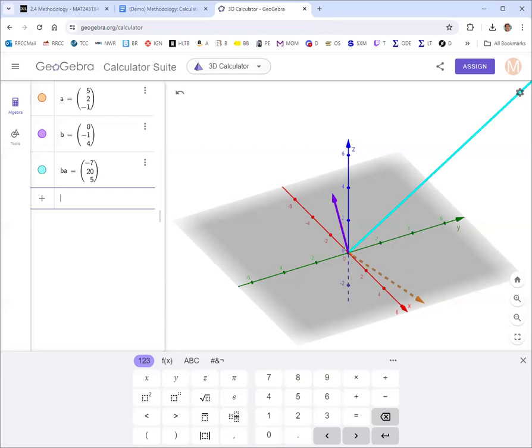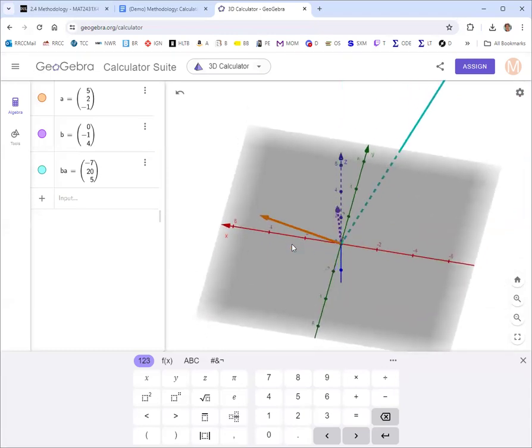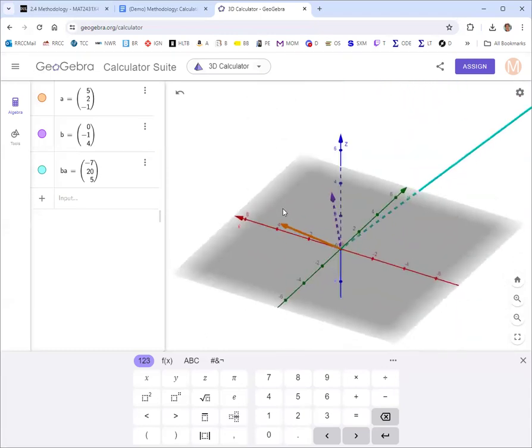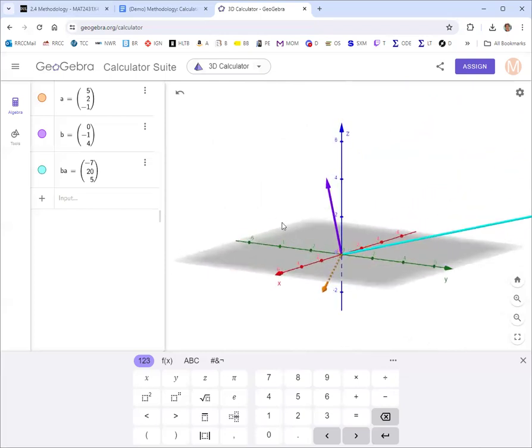If you take your right hand and you point your fingers in the direction of the first vector, which is b, so you've got to imagine, well I guess this will work, so I've got my fingers pointed kind of up with my right hand with that purple vector b. Then you curl them in the direction of the other vector, which is kind of coming out of the screen, the orange vector a. Then your thumb should point in the direction of the cross product vector, which is to the right.